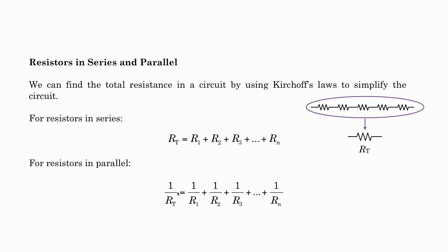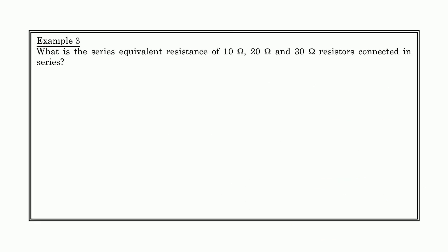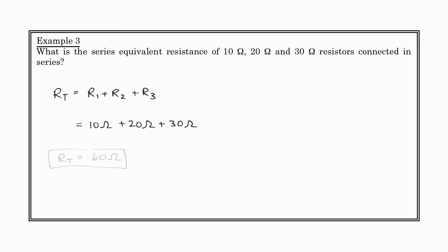For resistors in parallel, we don't add the values directly — we add their inverses. So 1/RT = 1/R1 + 1/R2 + 1/R3, and so on. Here's example three: what is the series equivalent resistance of a 10 ohm, a 20 ohm, and a 30 ohm resistor all connected in series? The equivalent resistance is 10 + 20 + 30 = 60 ohms.